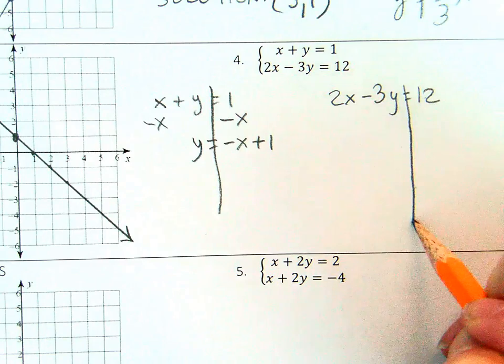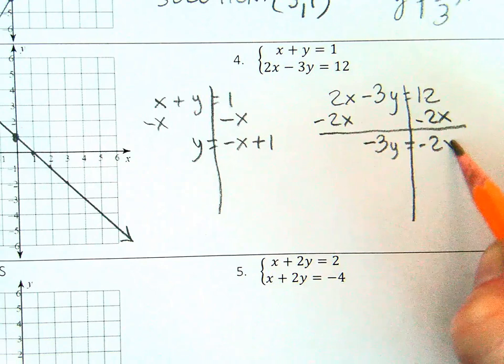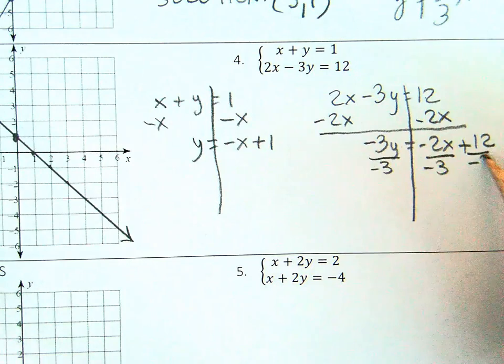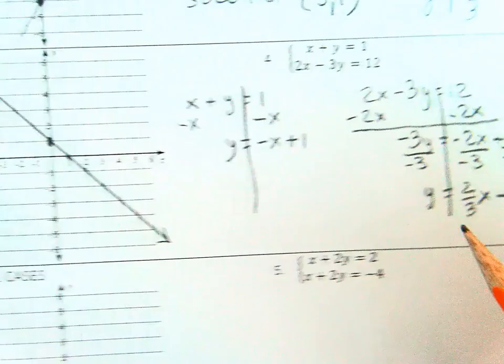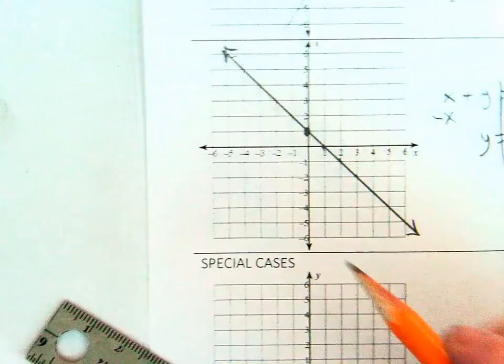Once again, subtract the x-term from both sides of the equation. Now you can graph the line.